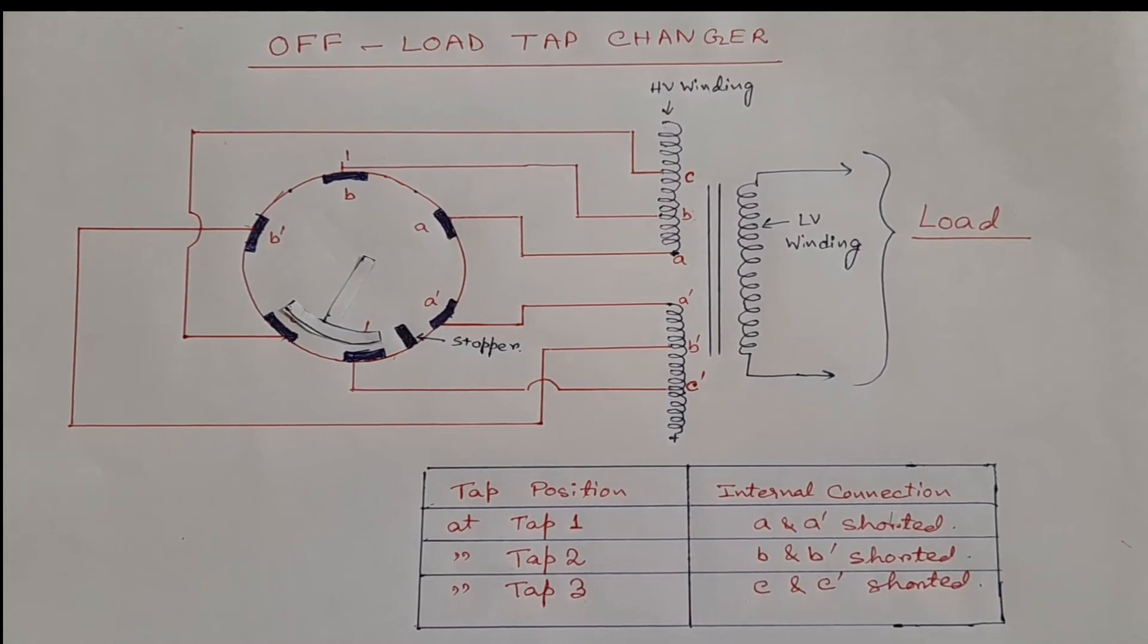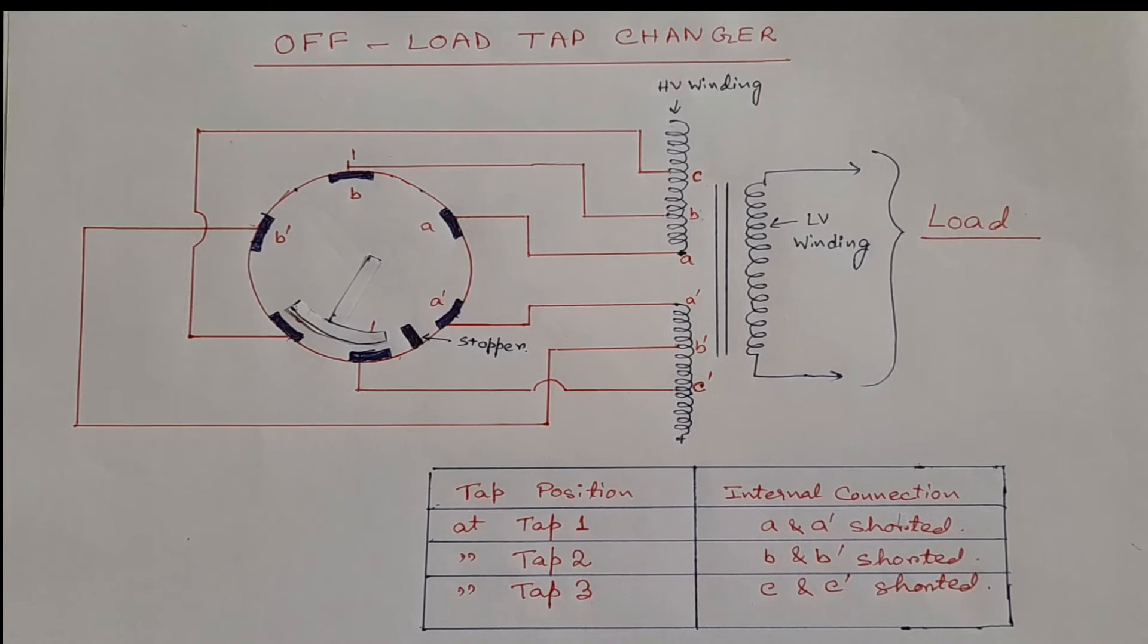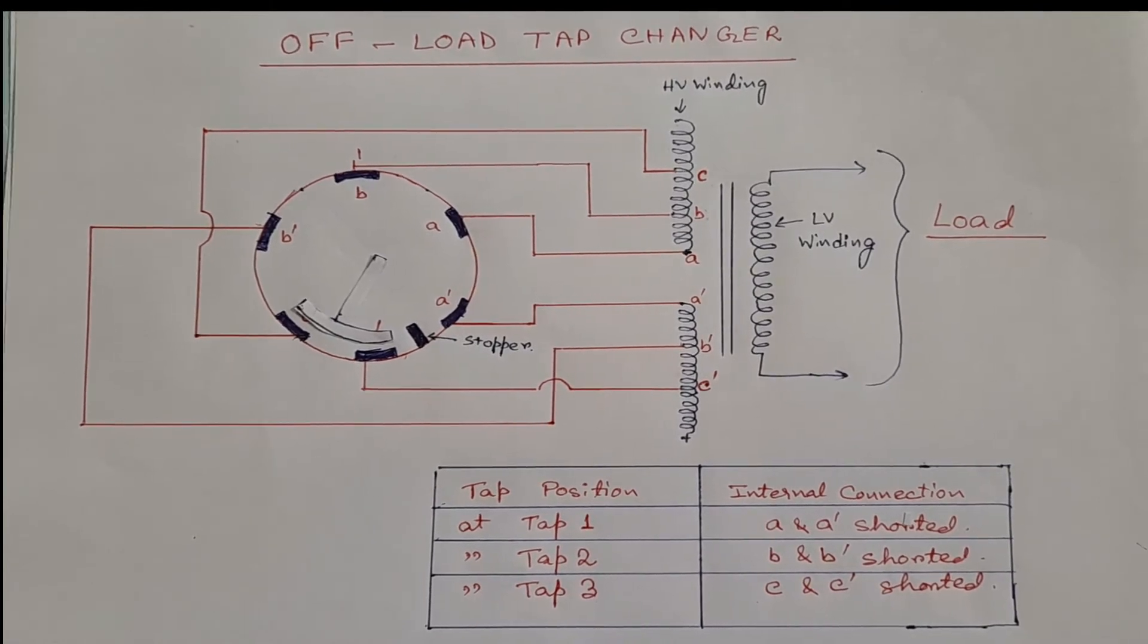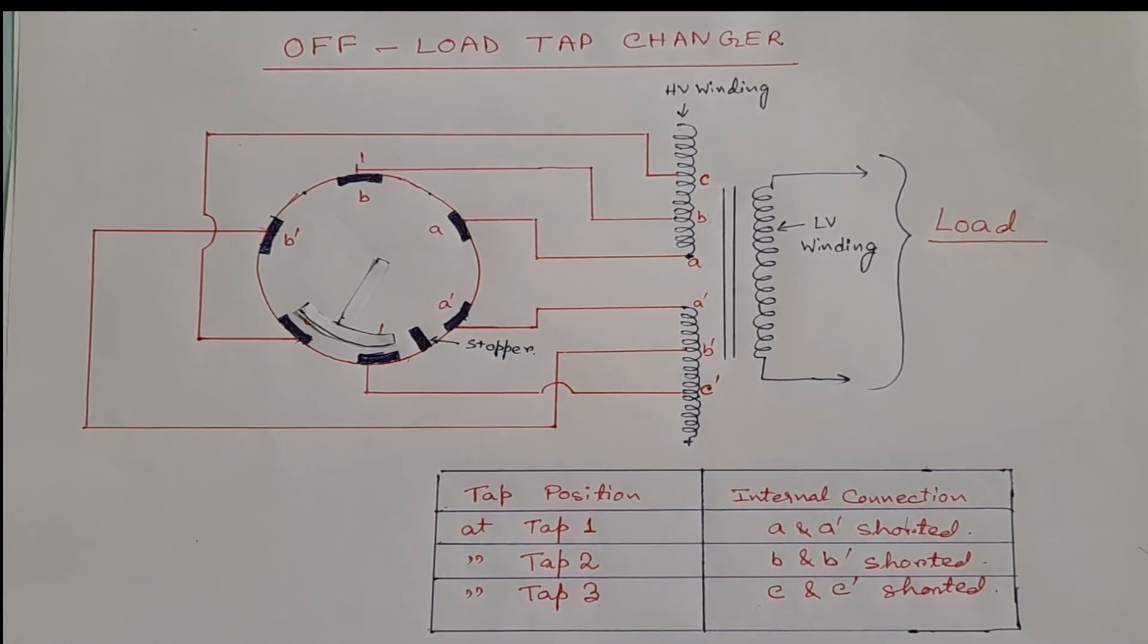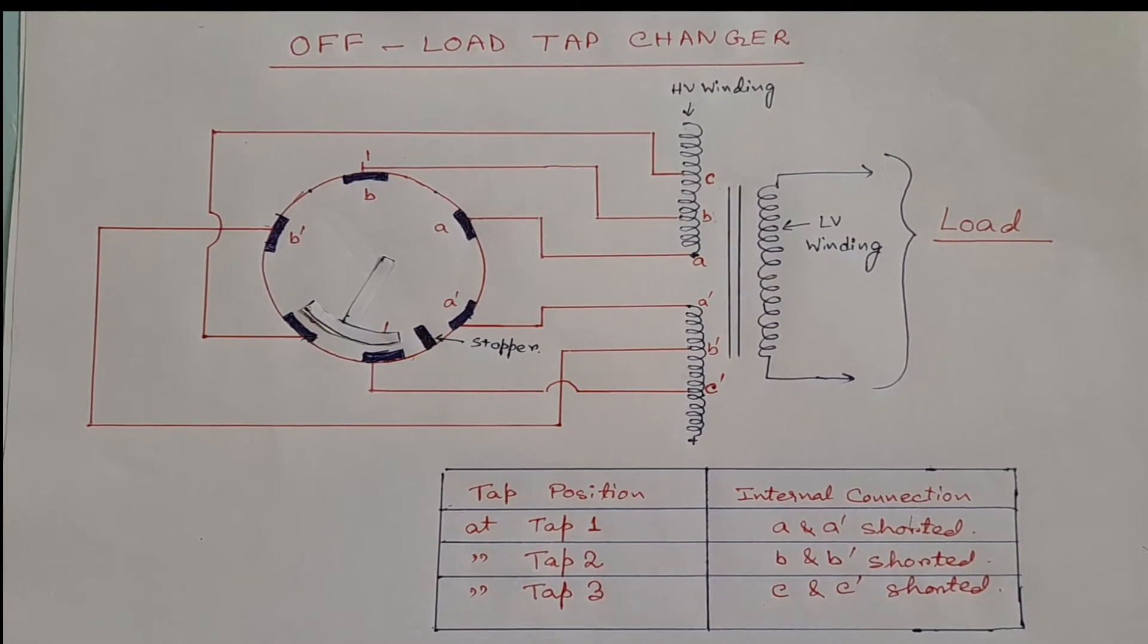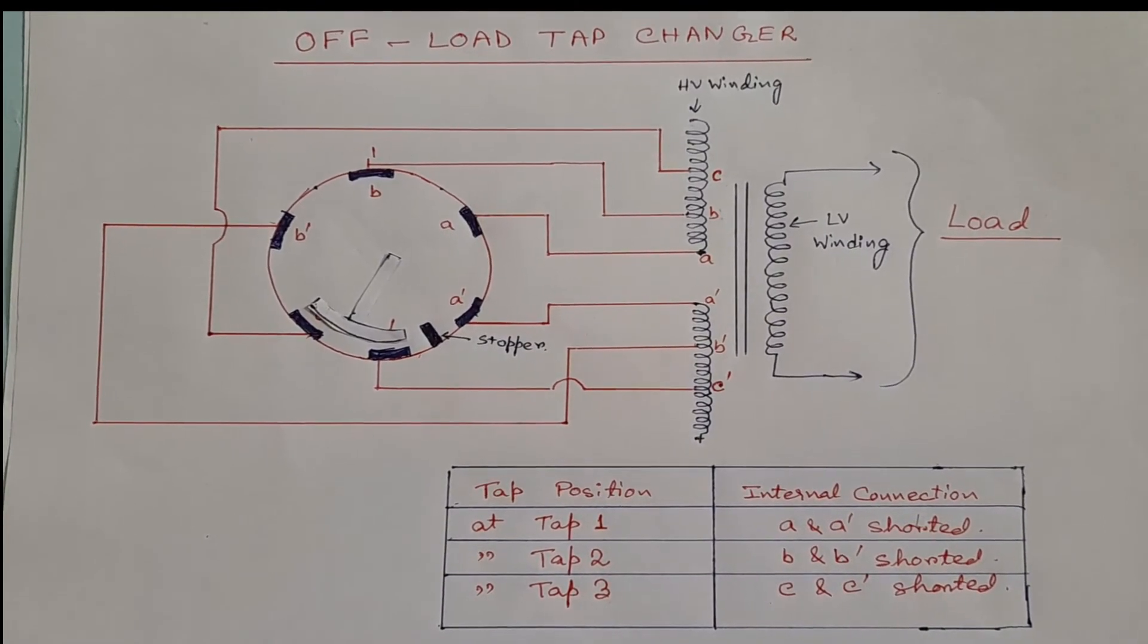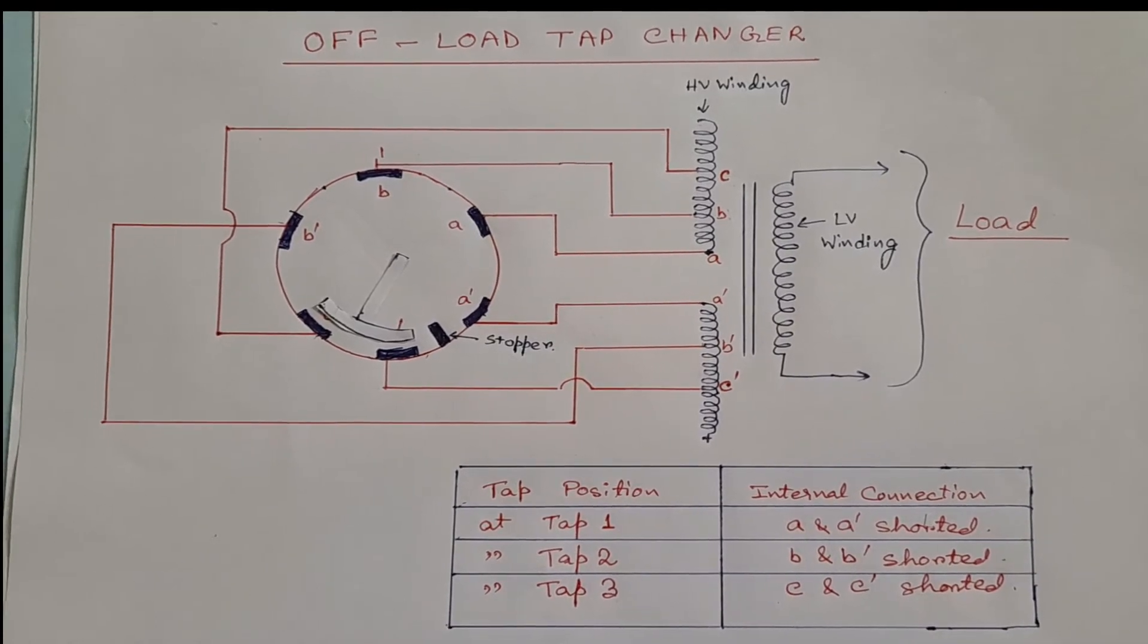Notice that during changing of tap position from one to three, we are actually reducing the number of turns in the HV winding of the transformer while keeping the number of turns in the LV winding constant. As a result, the terminal voltage in the LV side of this transformer is increased.